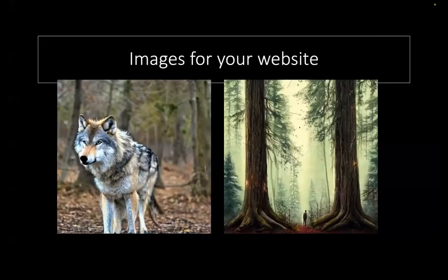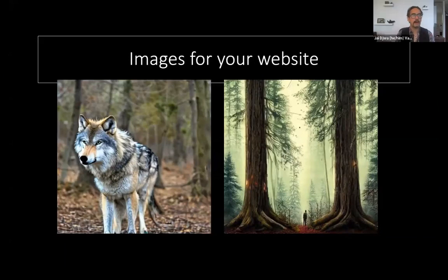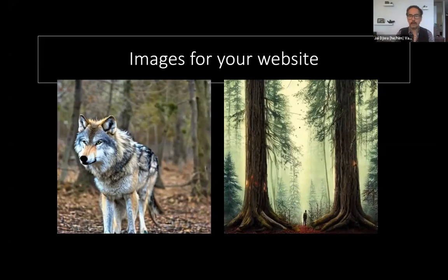Images for your website — you can see on the left there an AI-generated image of a wolf, and on the right some large cedar trees, some old growth forest. Again, these were very straightforward prompts: just saying "Show me a solo wolf in a forest," or "Draw me a dreamy picture of a cedar tree with a small person."